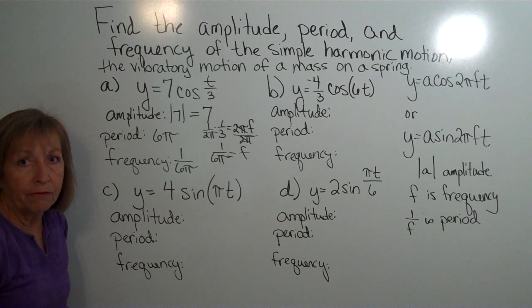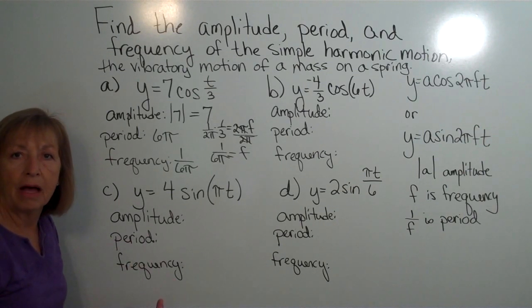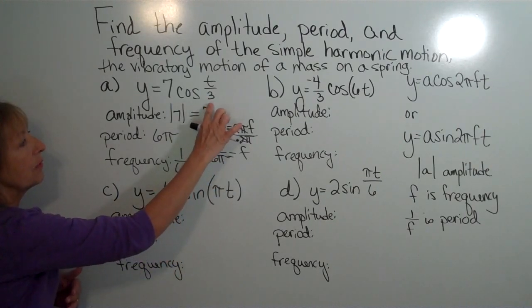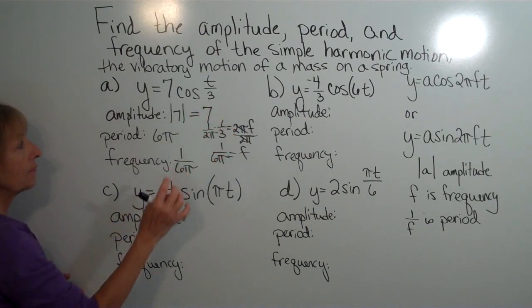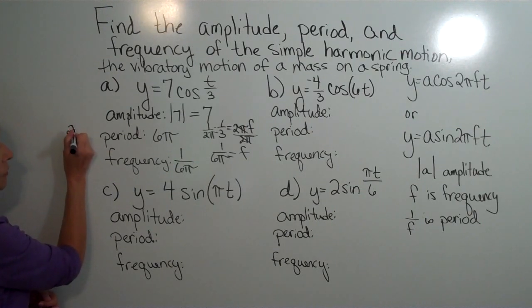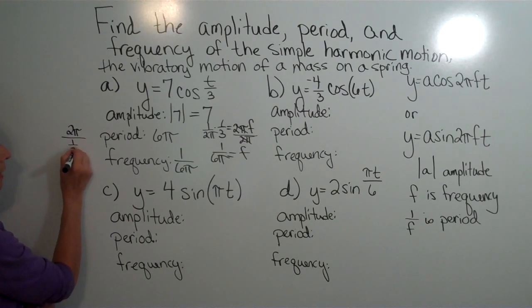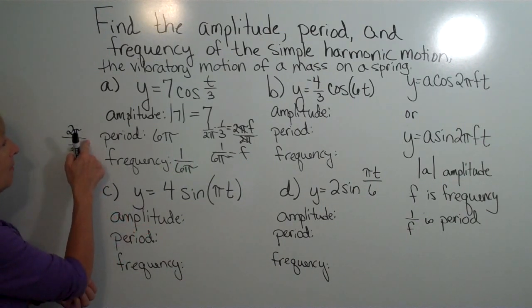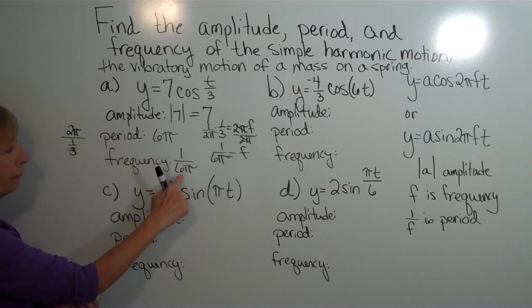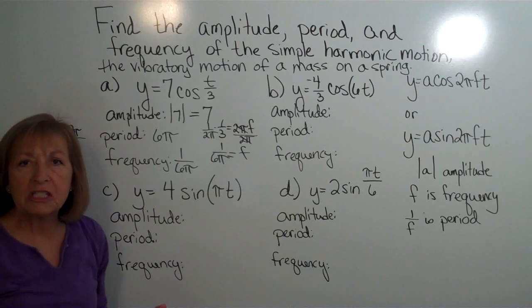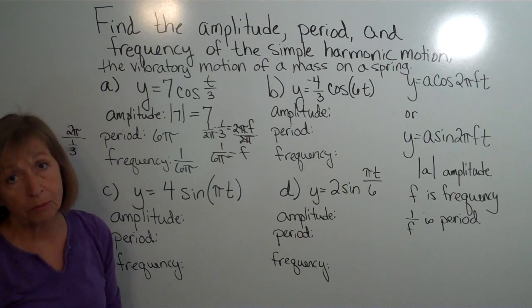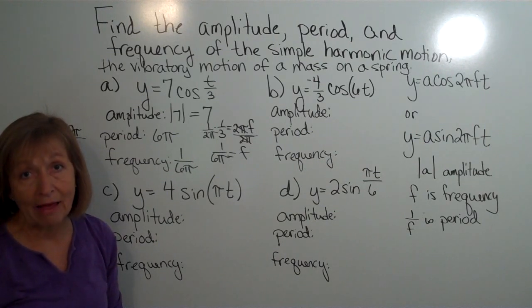Alternatively, if you're comfortable finding the period using the coefficient approach from graphing trig functions: think of this as one-third times t, so the period is the original period of cosine — which is 2 pi — divided by the coefficient of the angle, which is one-third. Taking 2 pi divided by one-third means multiplying by 3, giving a period of 6 pi, and then the frequency is 1 over 6 pi. Whichever approach you use first, you'll get the correct answer.